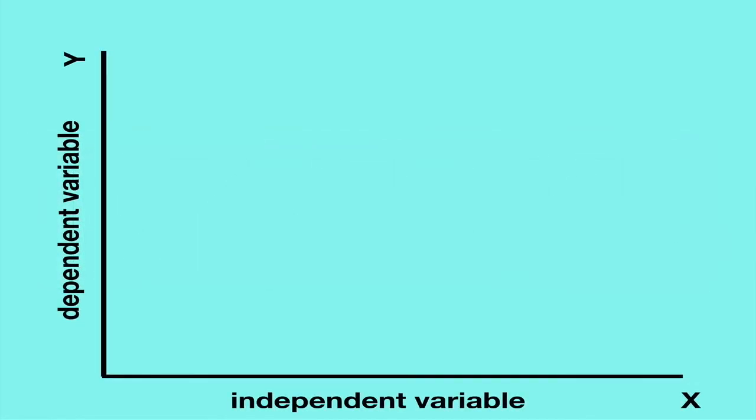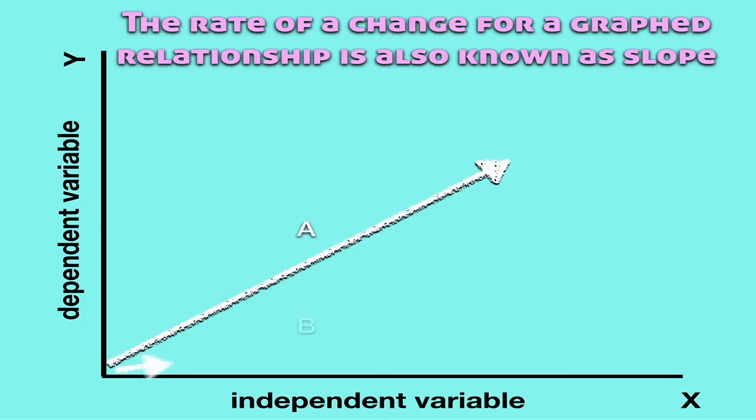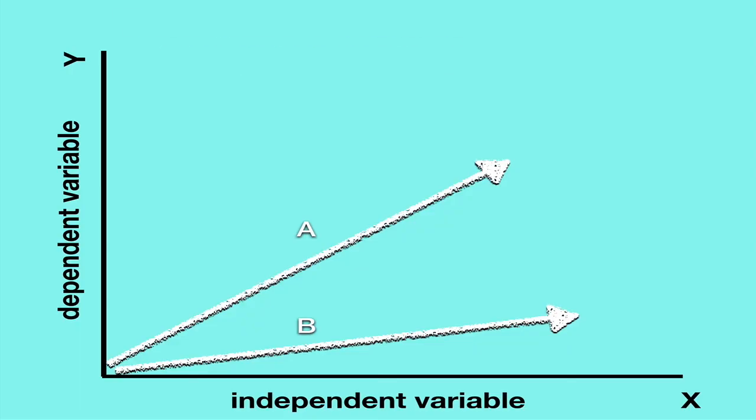One more thing about graphs. The rate of change, how fast a relationship is taking place, can also be referred to as the slope. So for example, this line compared to this line have very different slopes. Line A is increasing at a faster rate than line B. We can also say that the steeper the line, the greater the slope or the rate of change. And that's an important thing to keep in mind when we look at change on Earth. The faster something is taking place means that it's requiring less time to do so, whereas a slow change will require a lot more time. And the graph that we look at will reflect that.